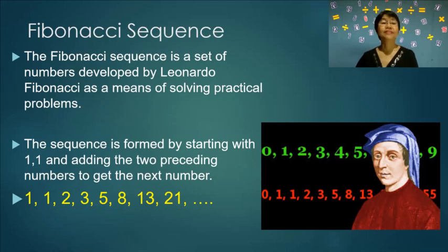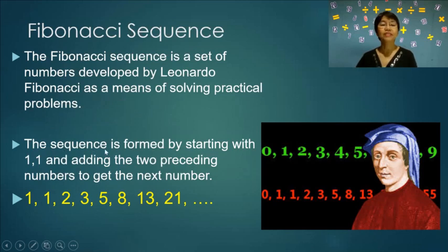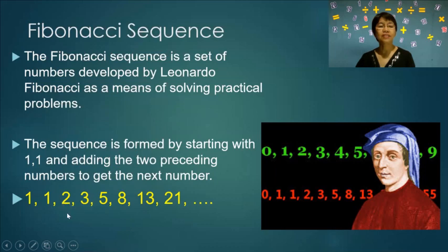Fibonacci sequence. The Fibonacci sequence is a set of numbers developed by Leonardo Fibonacci as a means of solving practical problems. The sequence is formed by starting with 1, 1 and adding the two preceding numbers to get the next number. So 1 plus 1 is 2, 1 plus 2 is 3, 2 plus 3 is 5, 3 plus 5 is 8, 5 plus 8 is 13, and so on.